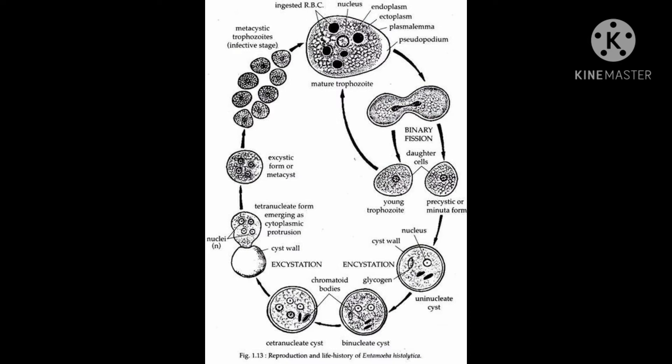I hope all of you understand. I have already given information by drawing the diagram. Here, if you compare, there are stages which we were explaining on the board. You can see the binucleate cyst and the uninucleate cyst — uni means single nucleus, bi means two nuclei. Like that, the uninucleate converts into binucleate, and binucleate converts into tetranucleate.